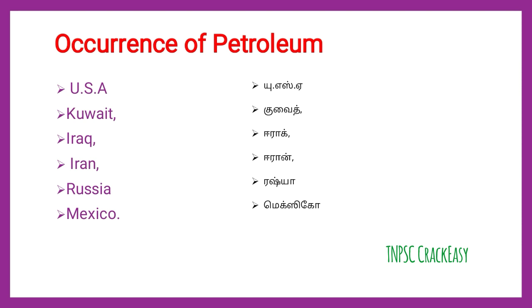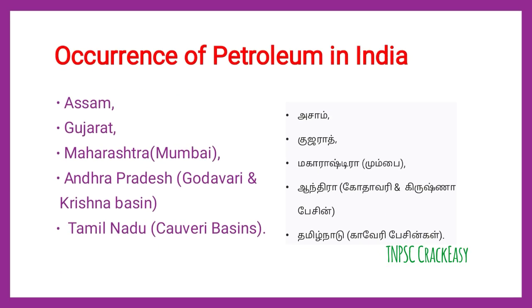Let us know the places where petroleum is found in India. In India, petroleum is found in Assam, Gujarat, Maharashtra, Mumbai, Andhra Pradesh, and in the Godavari and Krishna Basins.